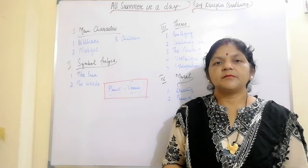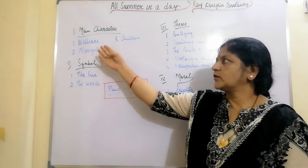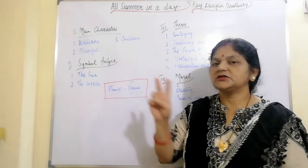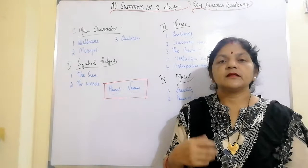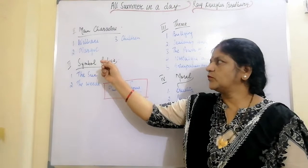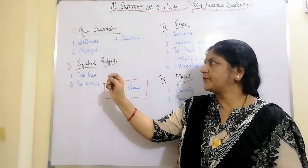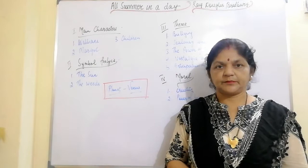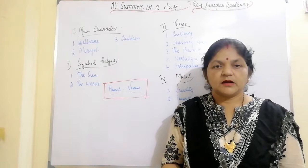Now I'll tell you about the third character: the children. William and Margaret are the only two students named in the story, but the other students also join William in teasing Margot, and they get to play outside in the sun while Margaret was locked up. In their unruly excitement before the sun comes out, the author writes that they are like jumbled weeds. But after they have experienced the sun's revitalizing energy, the school children are devastated by the return of the rain, and they suddenly feel ashamed about how they have treated Margot.